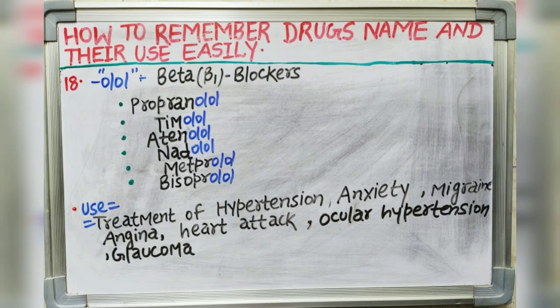Next suffix is -olol, which indicates beta-1 blockers. Drugs include propranolol, timolol, atenolol, nadolol, metoprolol and bisoprolol — all ending with the -olol suffix. It is used in treatment of hypertension, anxiety, migraine, angina and heart attack. Timolol is also used in ocular hypertension or glaucoma, as it reduces intraocular pressure in the eyes.